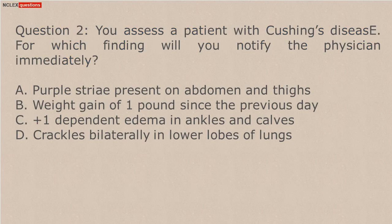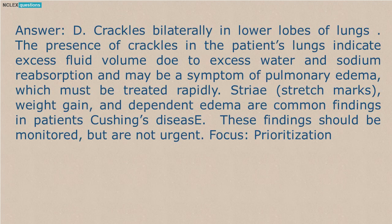Question 2. You assess a patient with Cushing's disease. For which finding will you notify the physician immediately? A. Purple striae present on abdomen and thighs. B. Weight gain of 1 pound since the previous day. C. Plus 1 dependent edema in ankles and calves. D. Crackles bilaterally in lower lobes of lungs. Answer: D. Crackles bilaterally in lower lobes of lungs. The presence of crackles indicates excess fluid volume due to excess water and sodium reabsorption and may be a symptom of pulmonary edema, which must be treated rapidly. Striae, weight gain, and dependent edema are common findings in Cushing's disease and should be monitored but are not urgent. Focus: Prioritization.